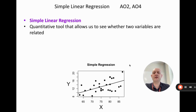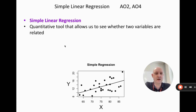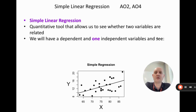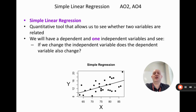So let's start — what is simple linear regression? It's a quantitative tool, meaning it uses numbers, that allows us to see whether two variables or two pieces of data are related. We're going to have one dependent and one independent variable, and we're going to see if we change the independent variable, does the dependent variable also change.